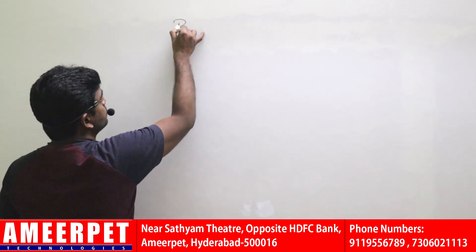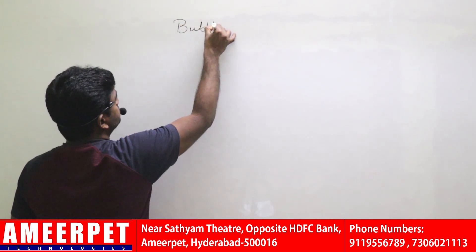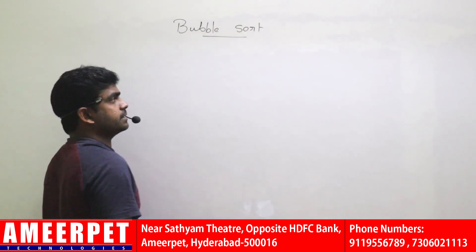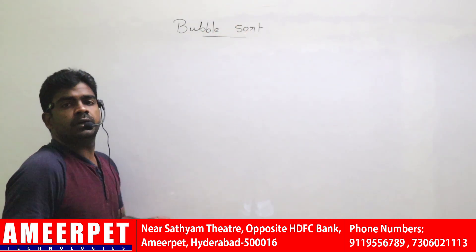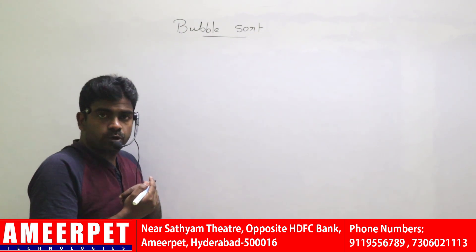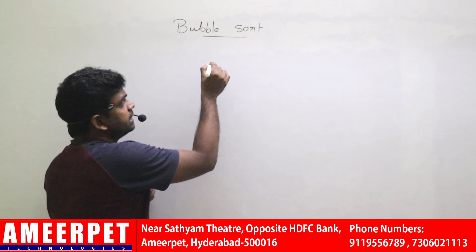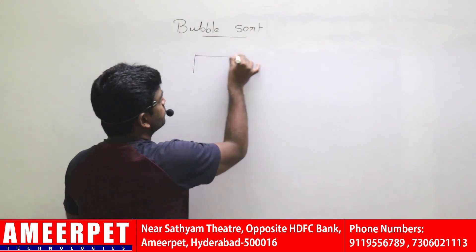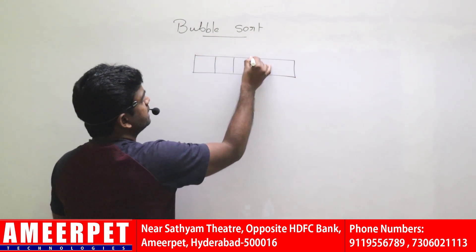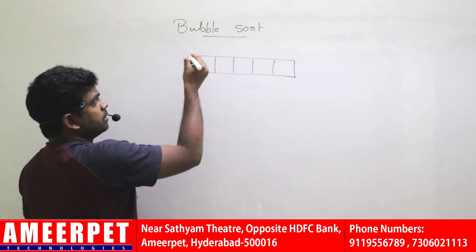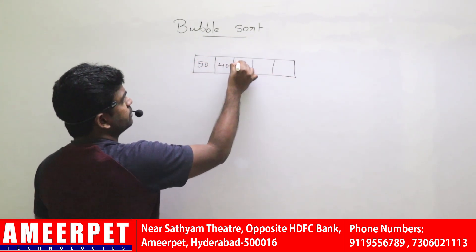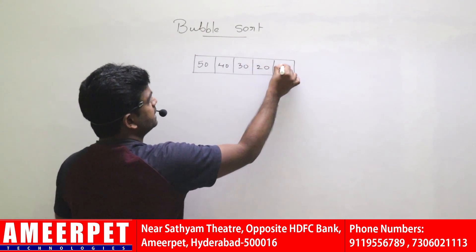Here is Bubble Sort Algorithm. It is a simple sorting technique. To explain more clearly, step by step process — let me take one array where all elements are in descending order. For example, I am taking the elements 50, 40, 30, 20, 10.